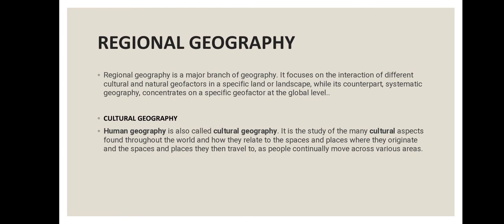The fourth branch is regional geography. Regional geography is a major branch that focuses on the interaction of different cultural and natural geo-factors in a specific land or landscape. Its counterpart, systematic geography, concentrates on a specific geo-factor at the global level. In regional geography we discuss the interaction of different kinds of people and cultures in a specific area, whereas systematic geography is concerned with only a specific geo-factor.